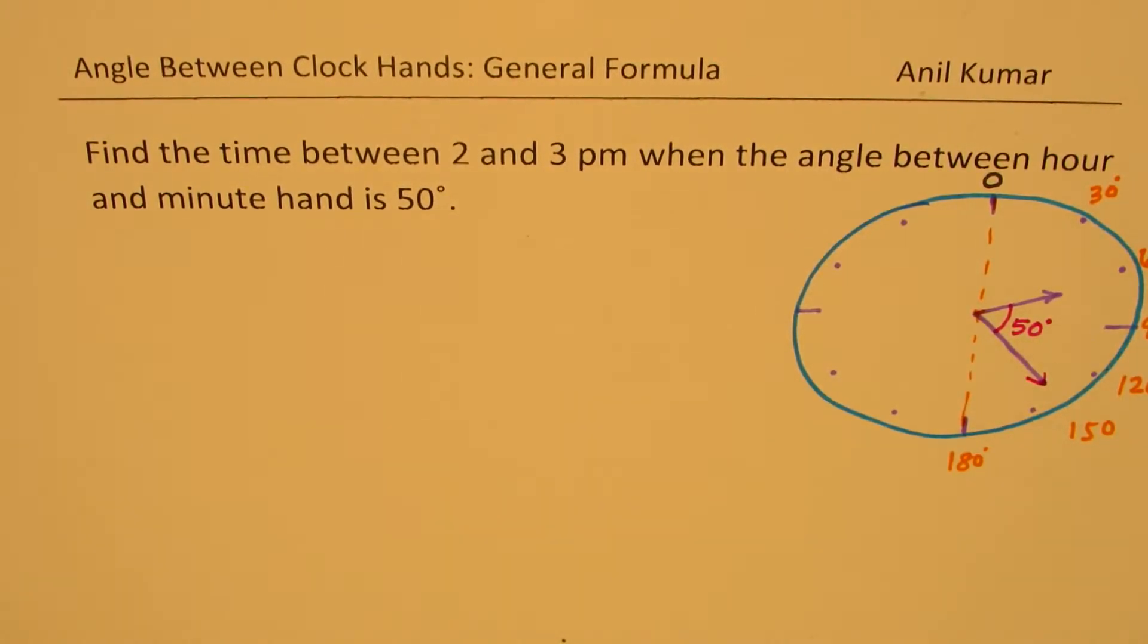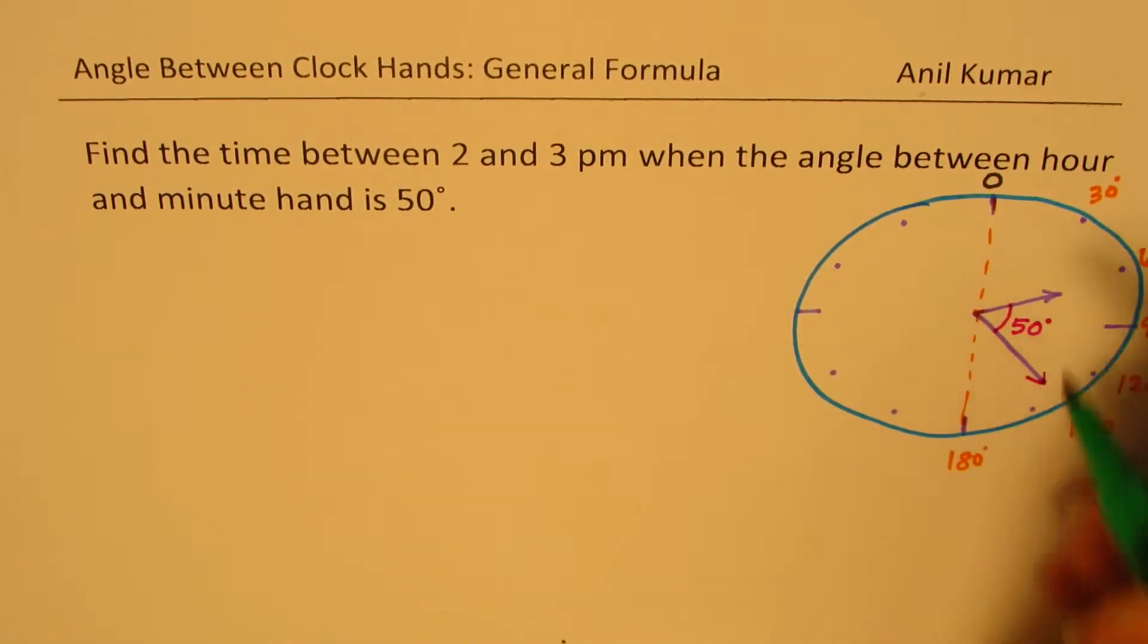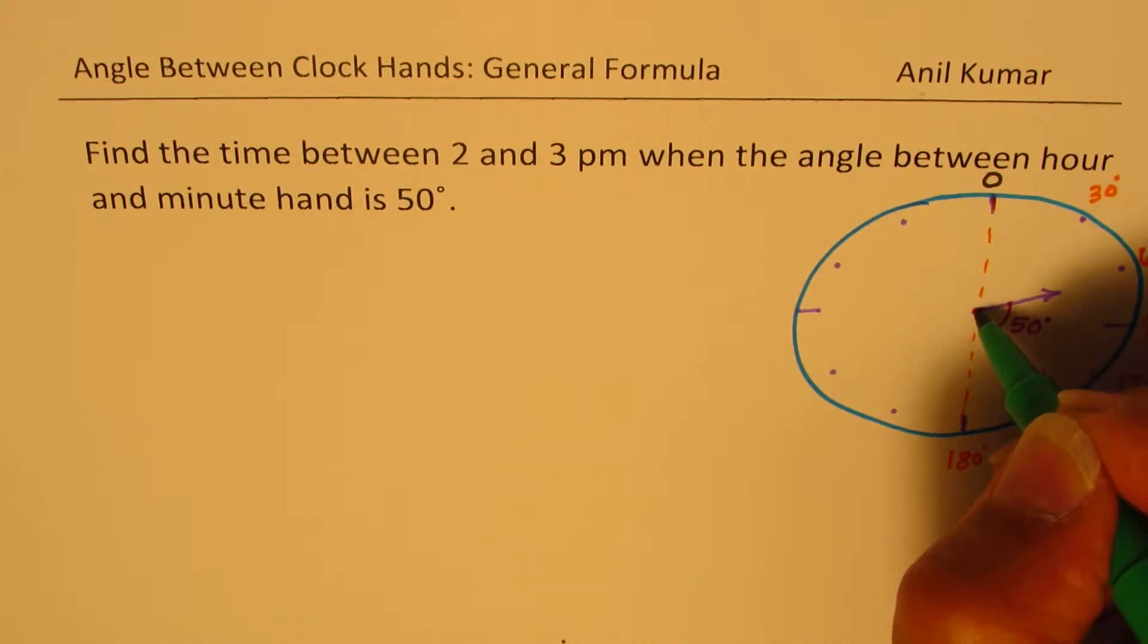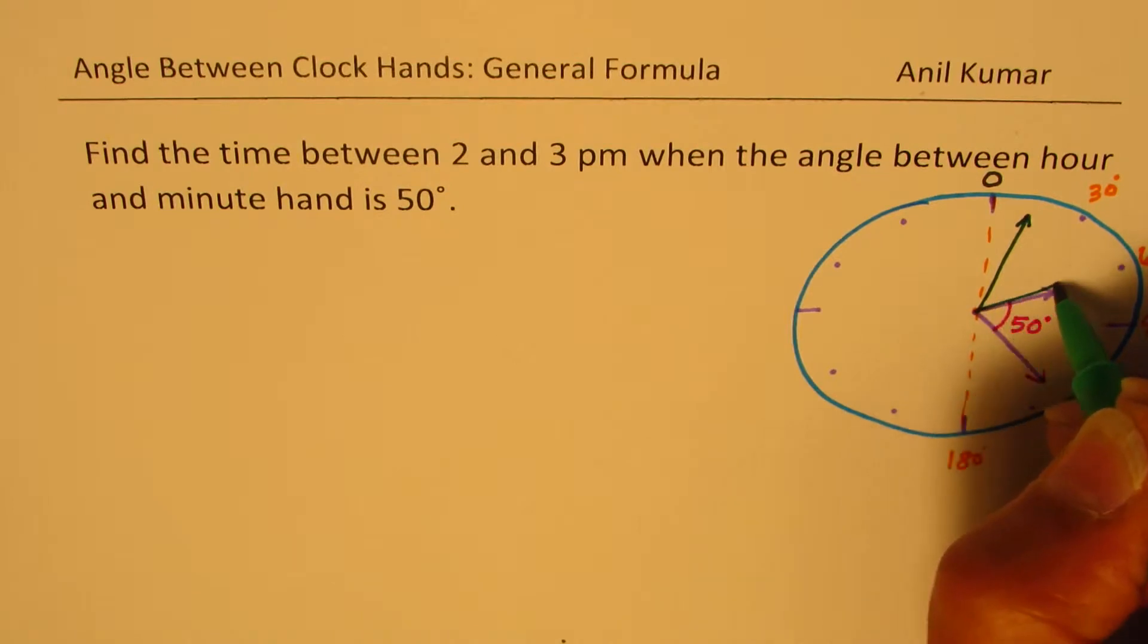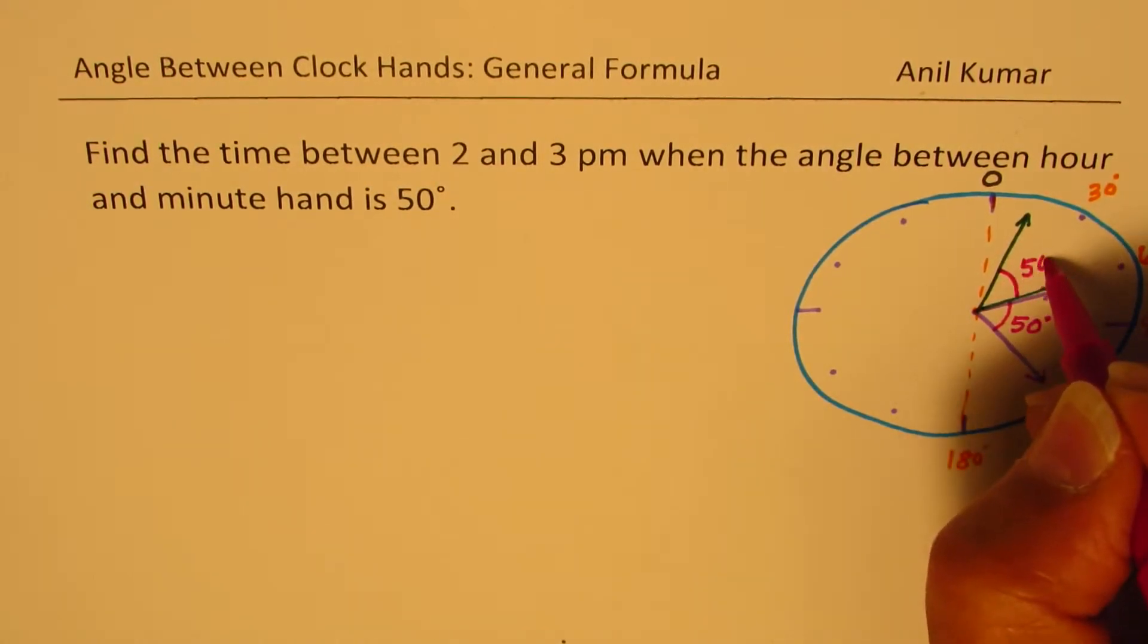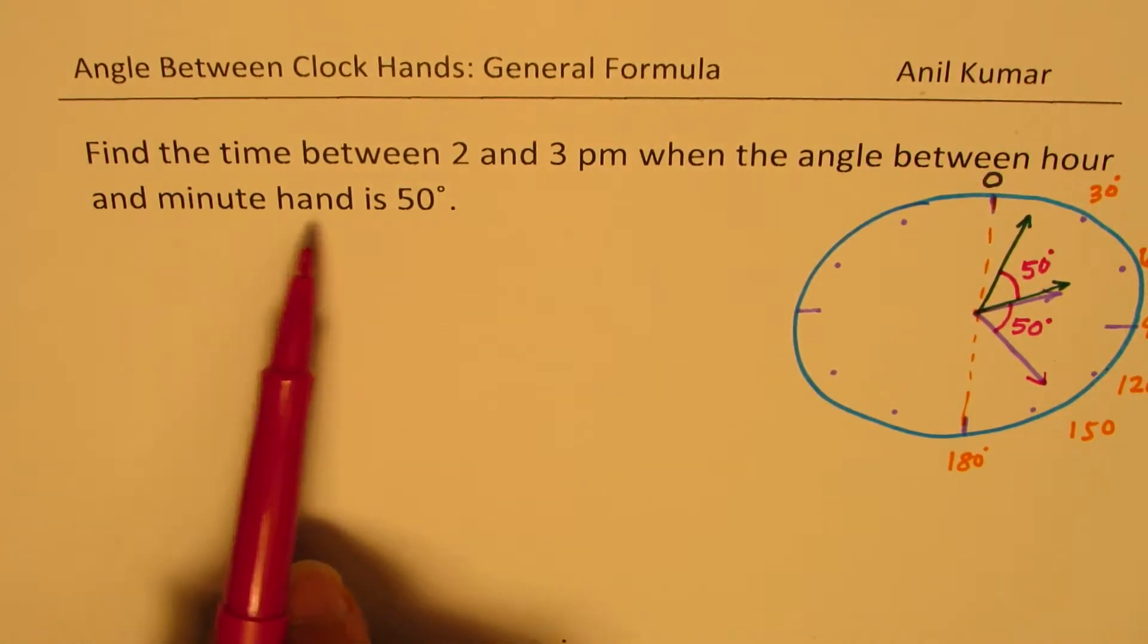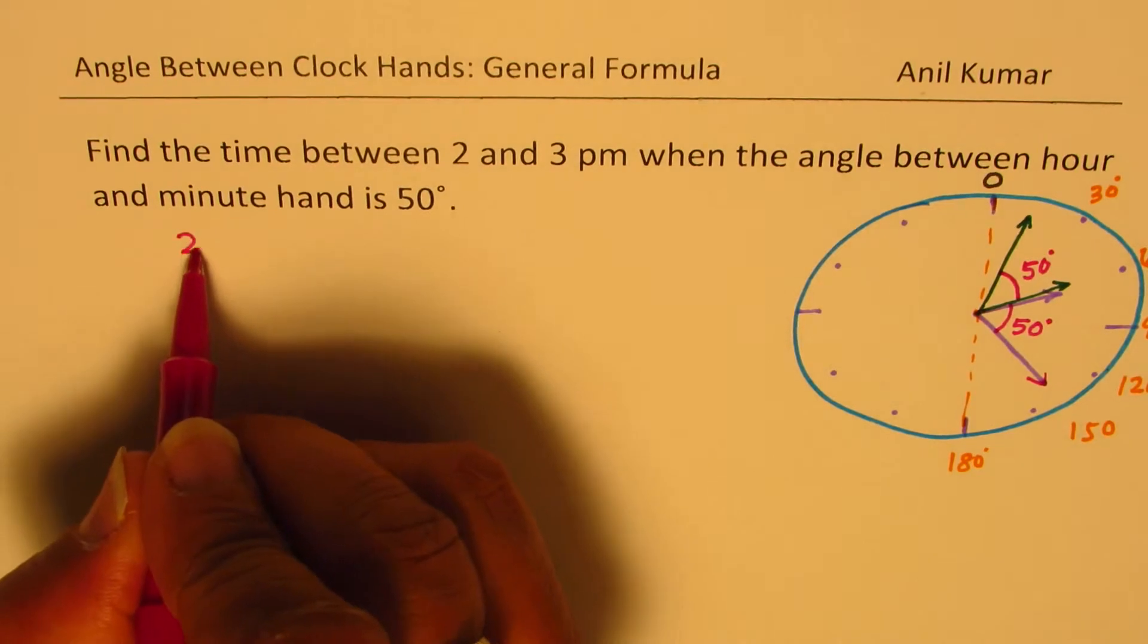Well, one more situation could be that this arm is on the other side, right? So that is to say, we could also have this somewhere here, and somewhere there, some position between 2 to 3. And we could also have an angle of 50 degrees between the two, right?